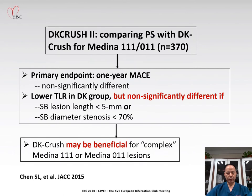Previously, we published the DK-Crush 2 trial comparing provisional stenting technique with DK-Crush for Medina 111 or Medina 011 coronary bifurcation lesions. At one-year follow-up, there was no significant difference in one-year MACE between the two groups. However, there was a significant reduction of TLR in the DK group, but this difference disappeared when side branch lesion length was smaller than 5 mm or side branch diameter stenosis was less than 70%. So, these results raised the possibility that DK-Crush may be beneficial for complex Medina 111 or Medina 011 lesions.